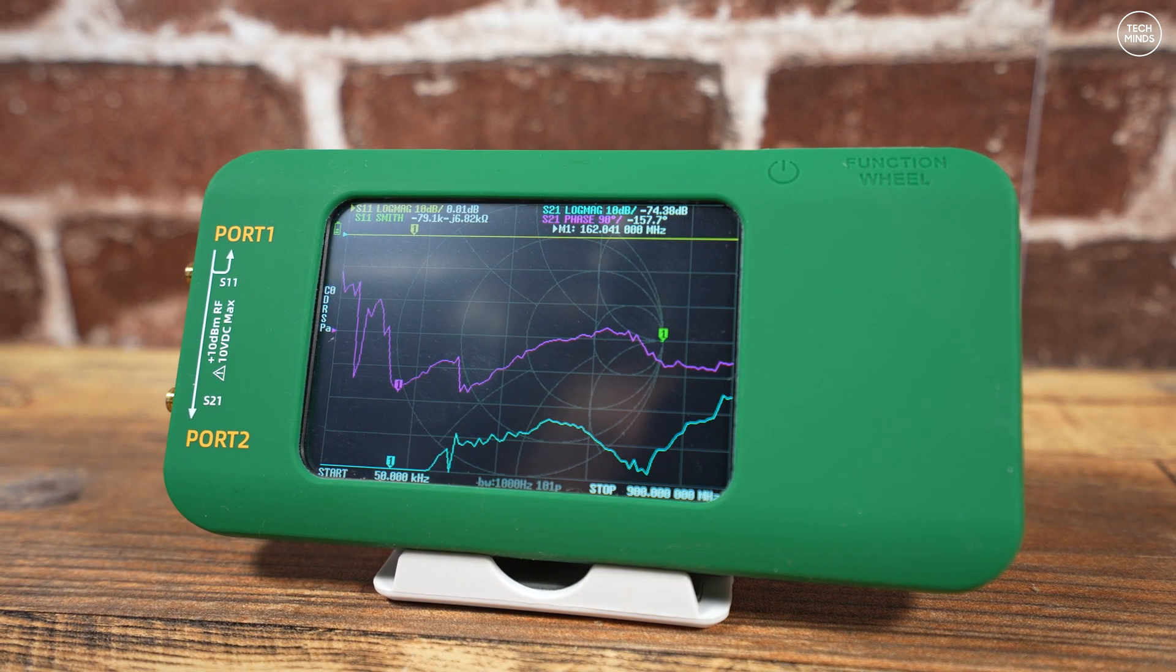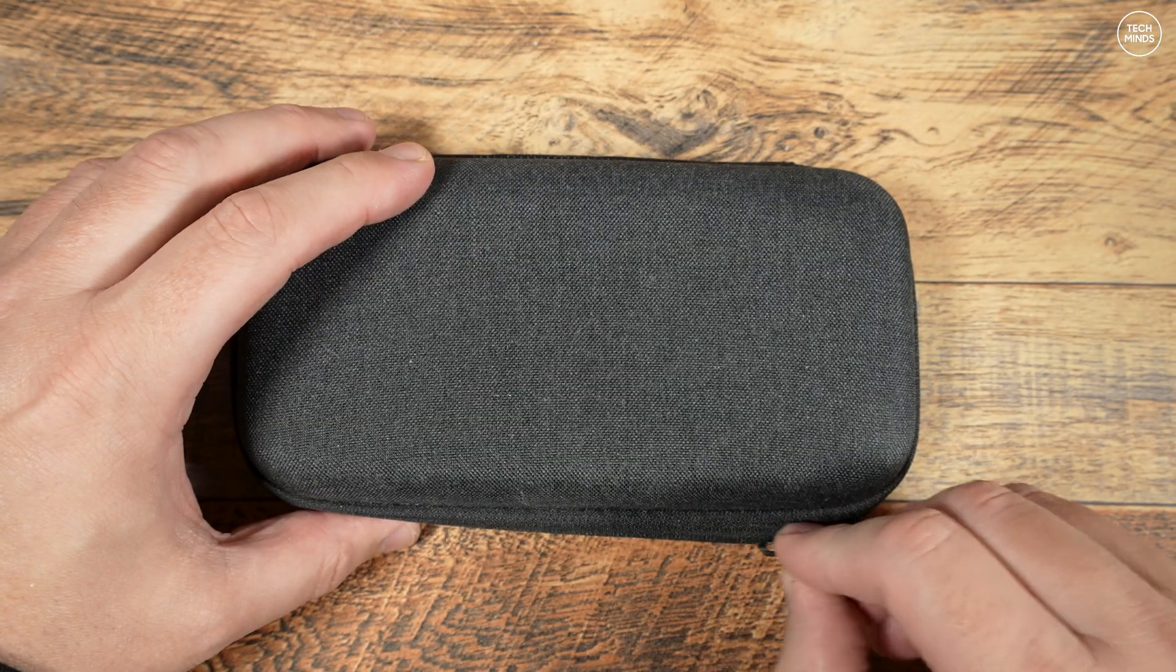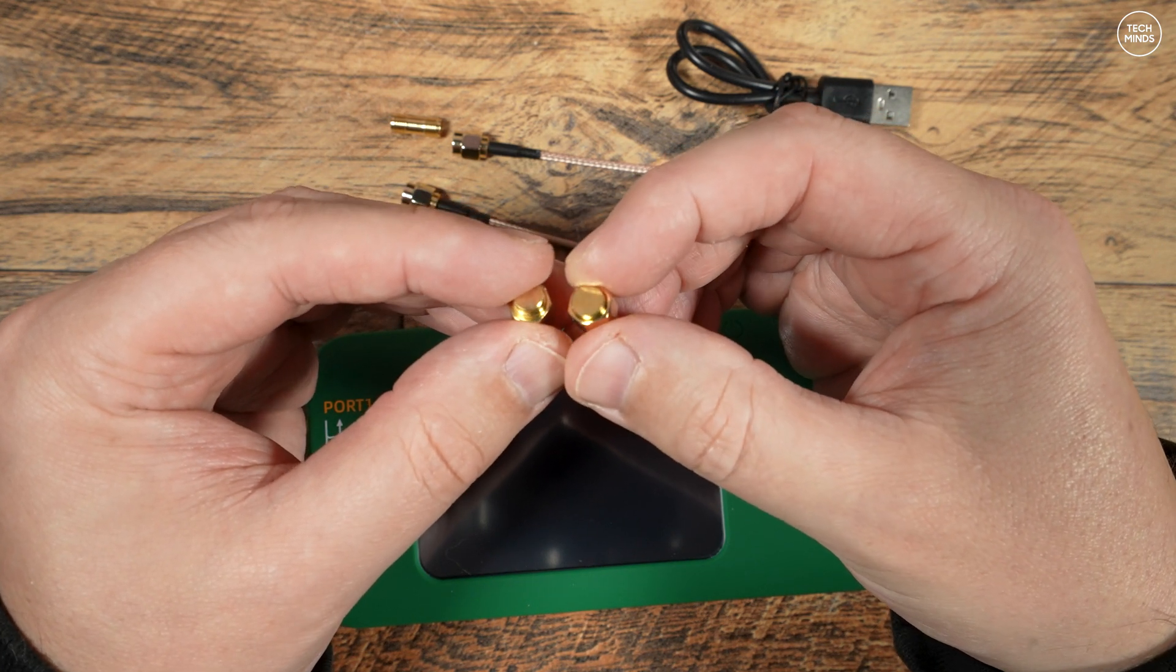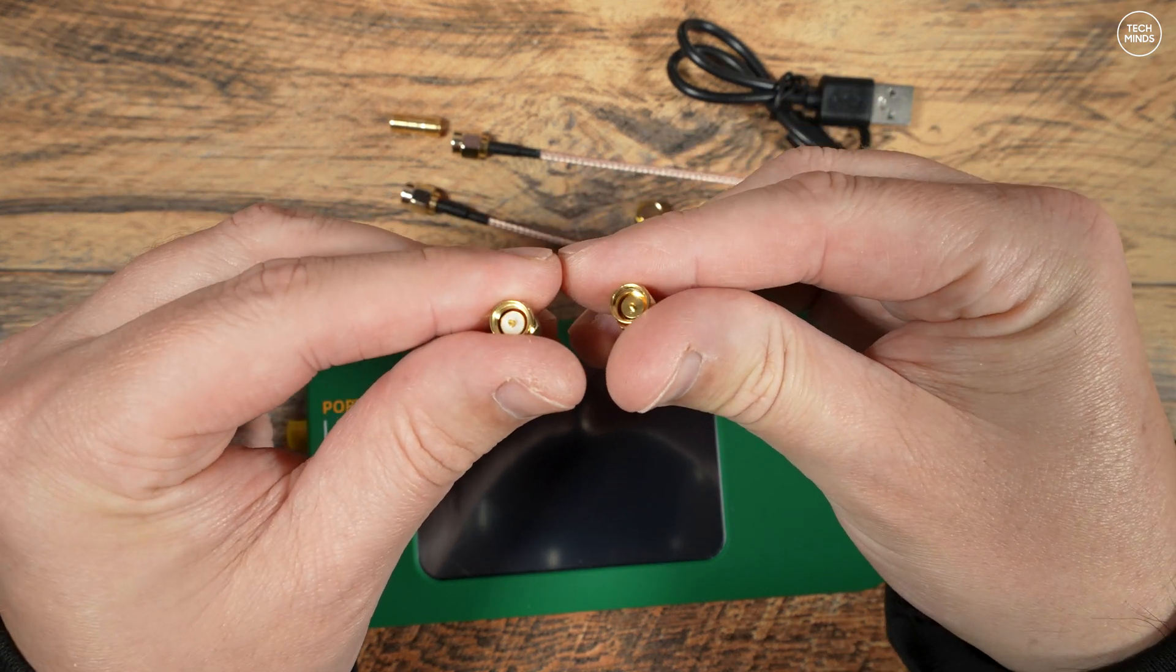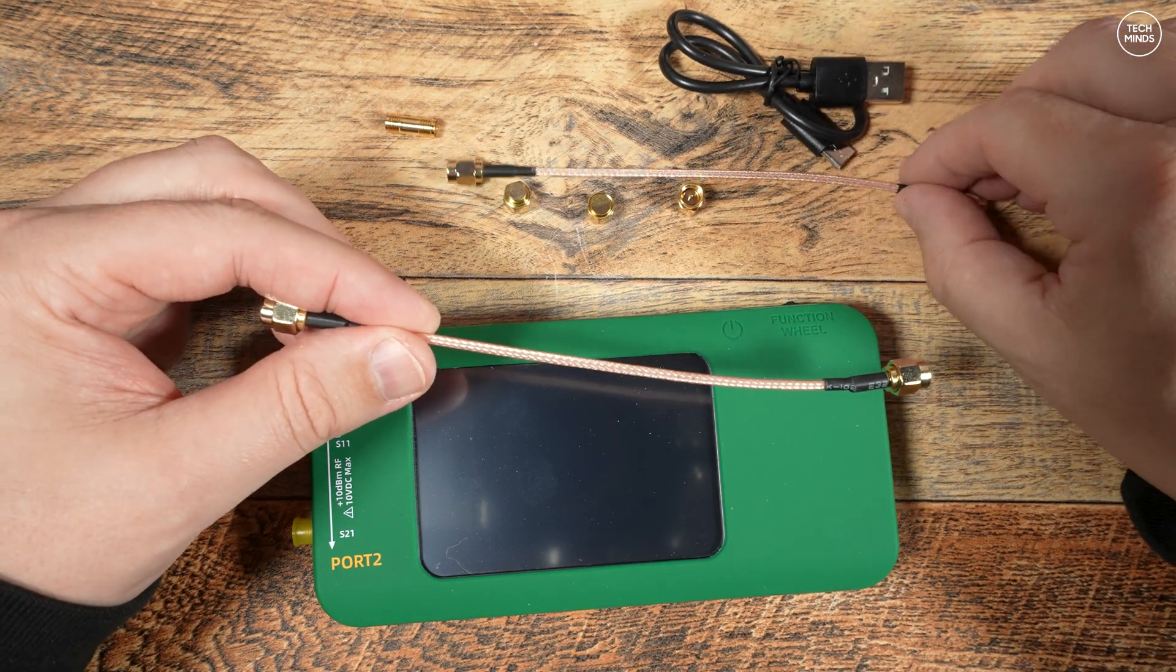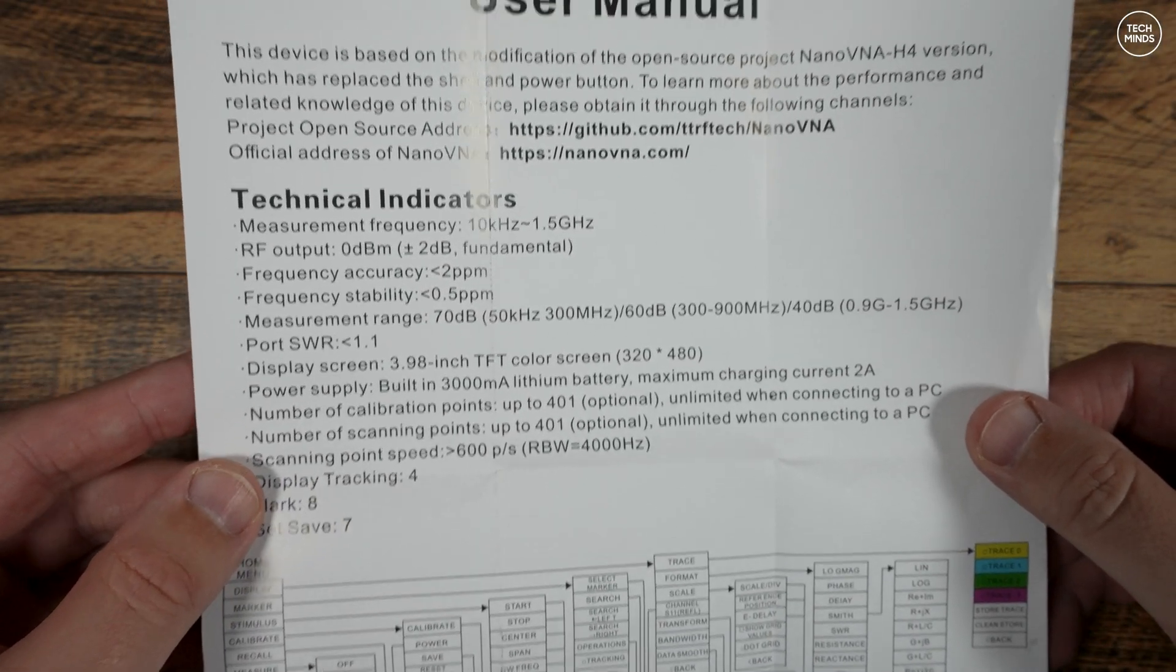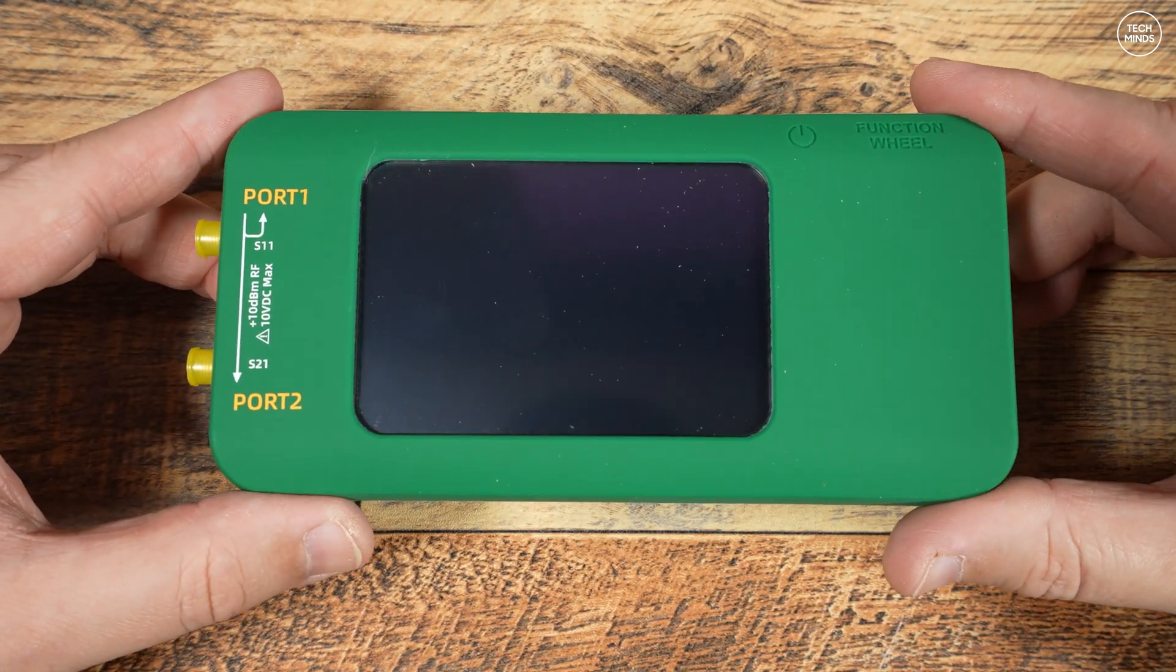You do get a nice little carry case where you can keep all of those little extras that you get. Those extras consist of calibration connectors which are needed to perform the calibration procedure. We then get a couple of short SMA patch cables which are used if you want to measure something like a bandpass filter or even a bandstop filter, or anything that goes in between the two connections.